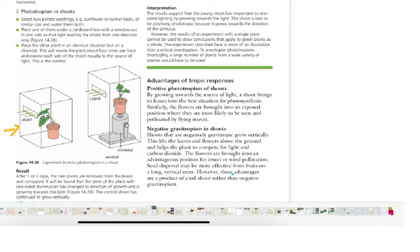However, results from a single plant cannot be used to draw conclusions for all green plants — to investigate phototropism properly, a large number of plants from a wide variety of species would have to be used. The advantages of positive phototropism are that the shoot brings its leaves into the best situation for photosynthesis, and the flowers are brought into an exposed position where they are more likely to be seen and pollinated by flying insects. Shoots that are negatively geotropic grow vertically, which lifts the leaves and flowers above the ground, helps the plant to compete for light and carbon dioxide, and brings flowers into an advantageous position for insect or wind pollination.